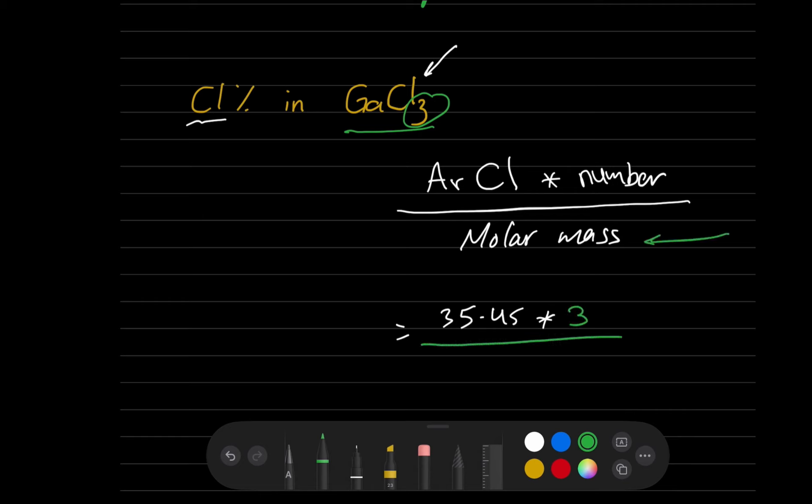What is the molar mass of the compound? We have to take the whole molar mass at this point. For gallium it's 69.72 plus 3 times 35.45. The molar mass of the compound is equal to 176.07.